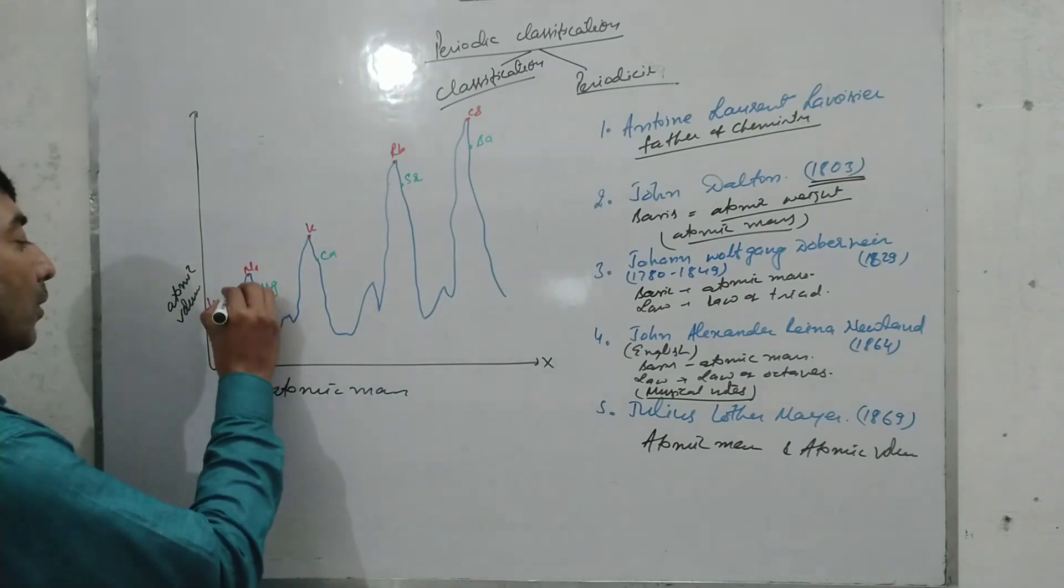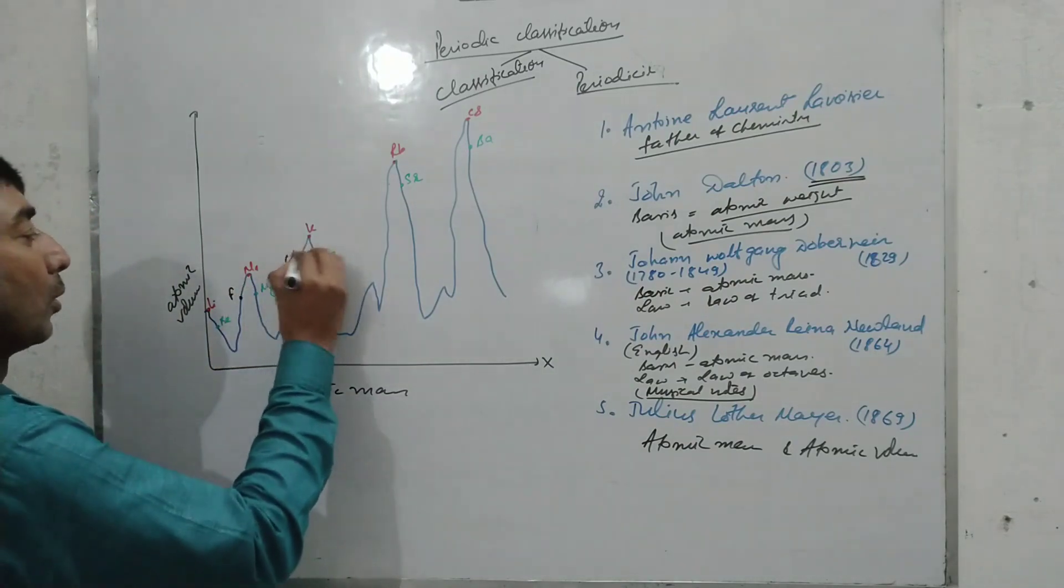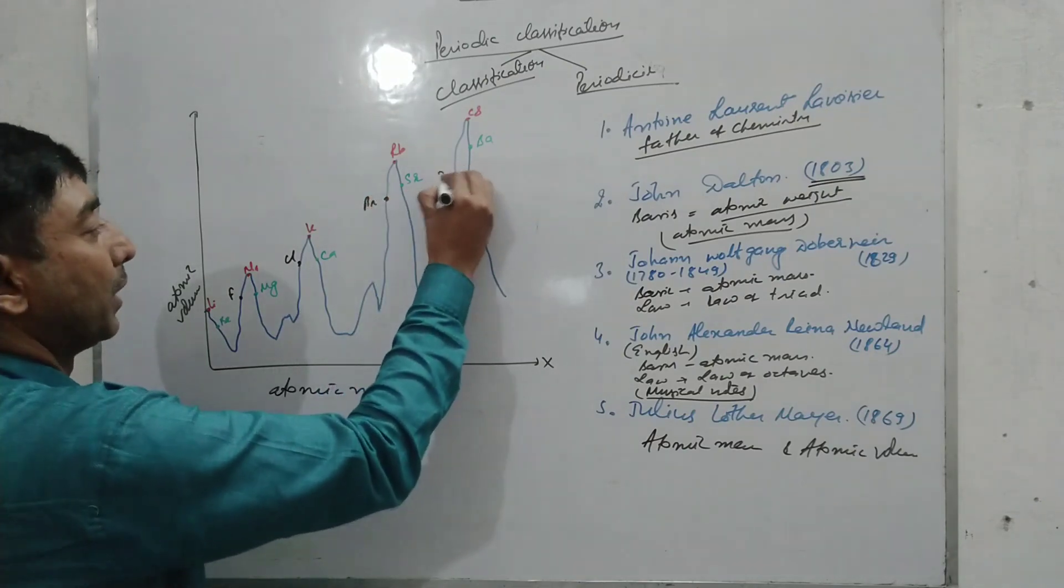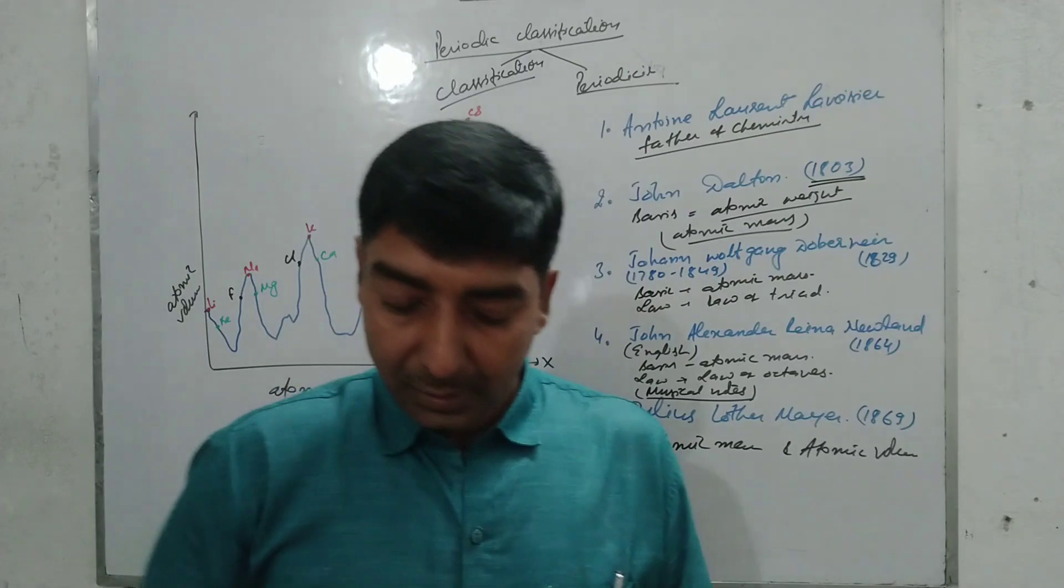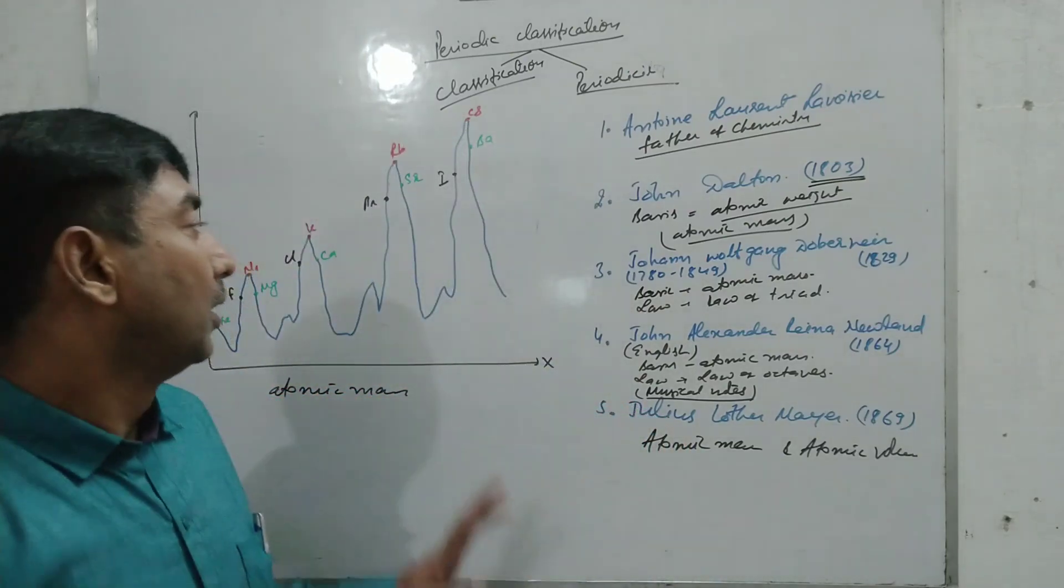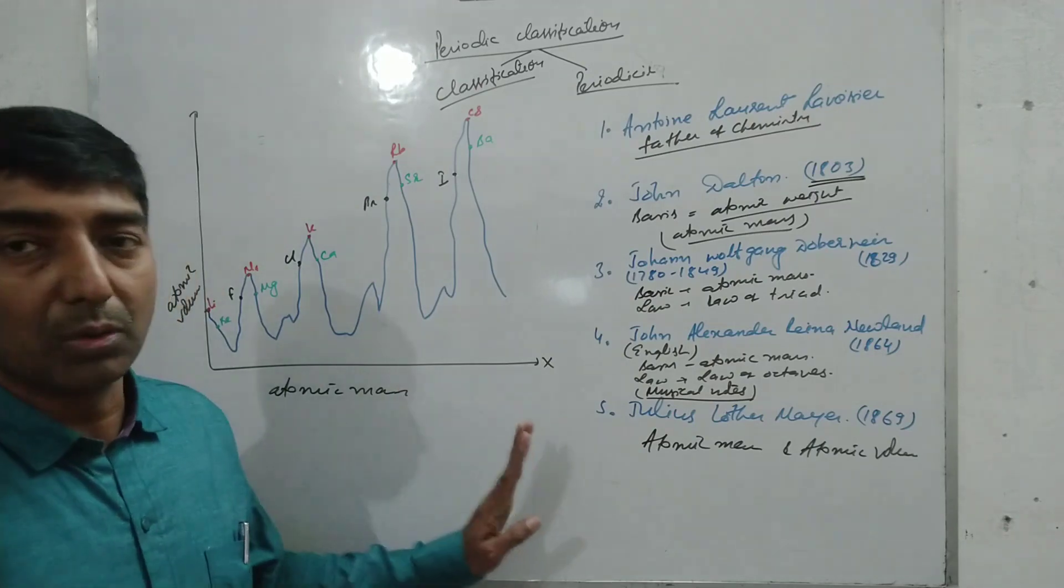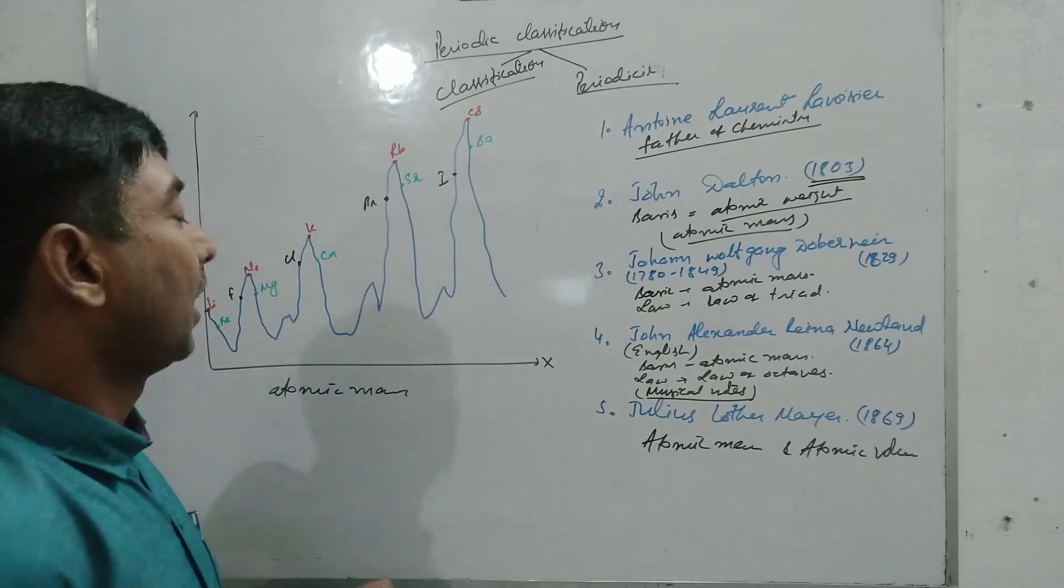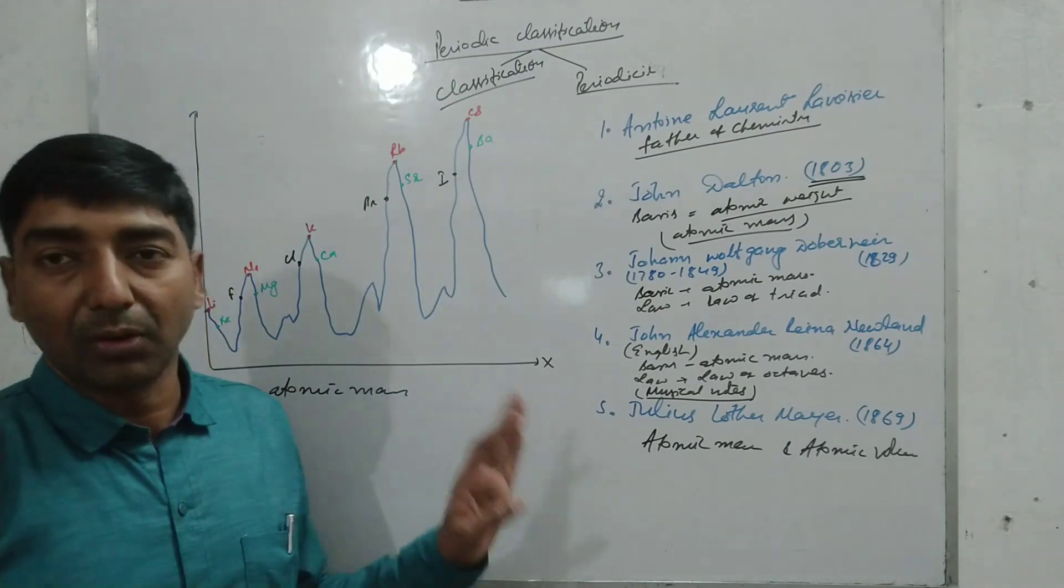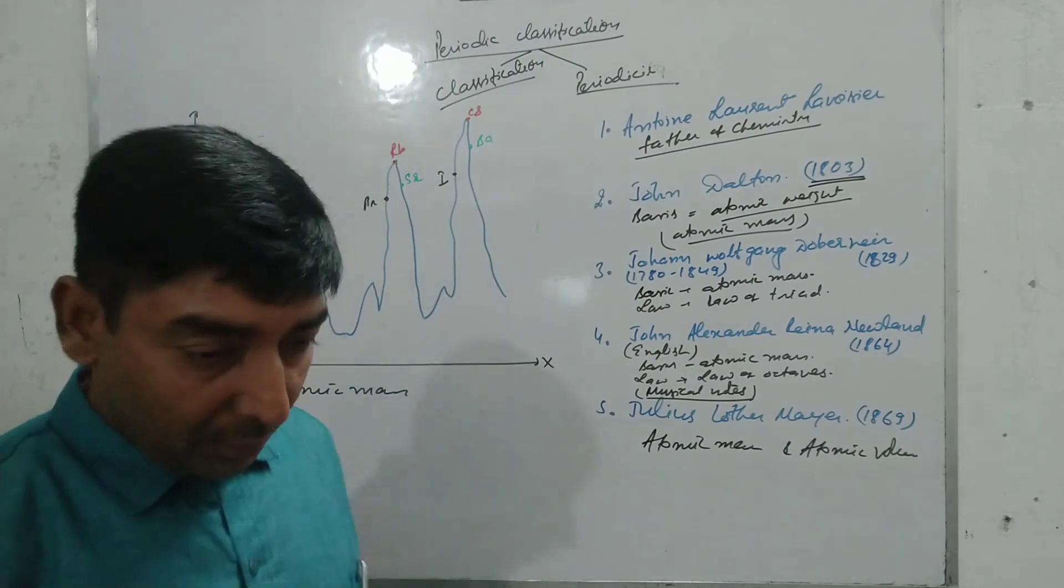While halogens occupy the ascending limbs of the graph, that is fluorine, chlorine, bromine, iodine, etc. This classification is good for lighter elements. It's also not good for higher elements or heavier elements and that's why this classification was also discarded.